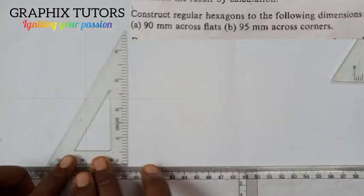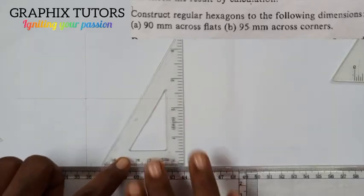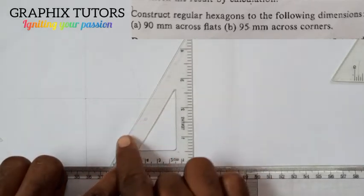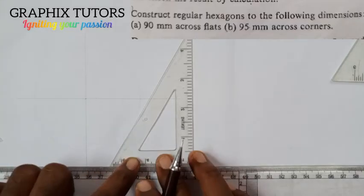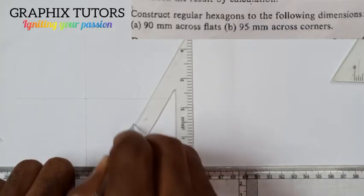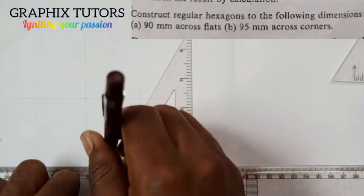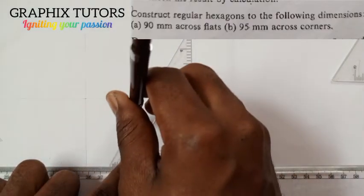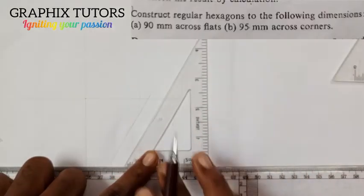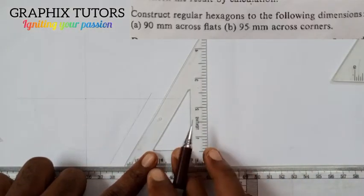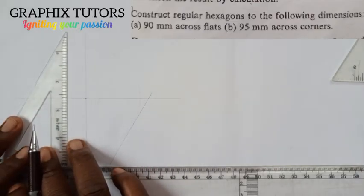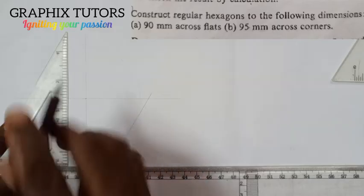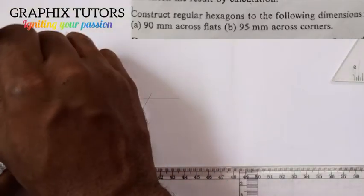Move the set square to this point, use the edge of it, and draw a line that is tangential to the circle. That is your front line, tangential to the circle. Then move it to the other side and draw the same line tangential to the circle on that side.